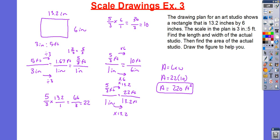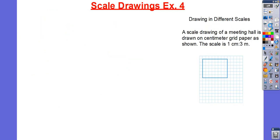Let's move on to our final example. This one is a little bit different — we're going to be drawing in different scales. Let's figure out what this actually means. I have a scale drawing of a meeting hall drawn on centimeter grid paper. The scale is 1 to 3, meaning 1 centimeter to 3 meters. I want to change my scale from 1 centimeter to 6 meters.